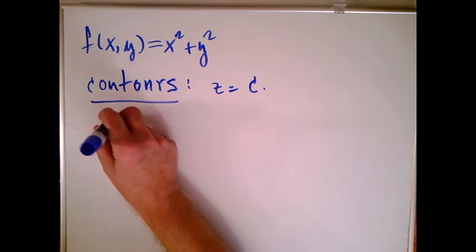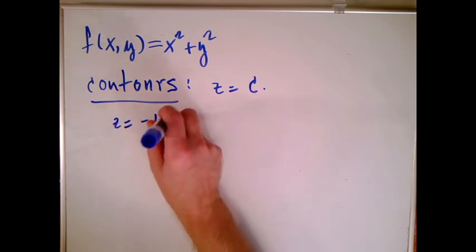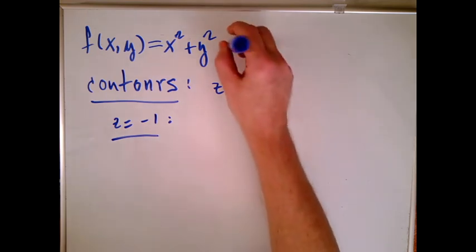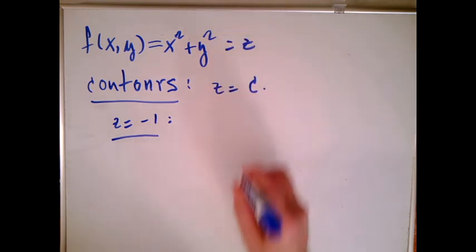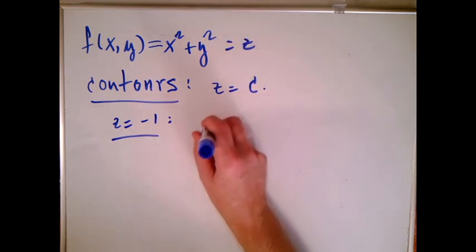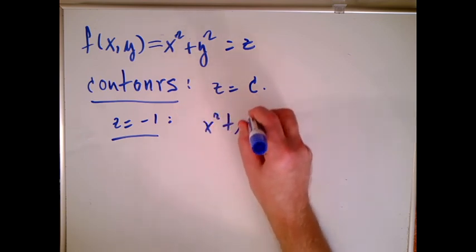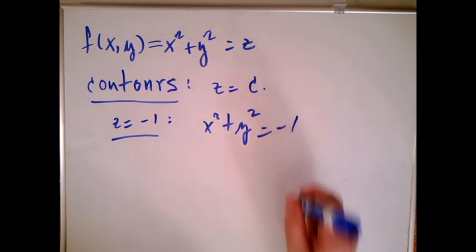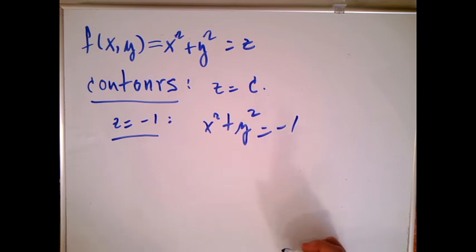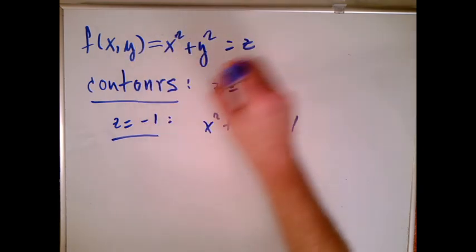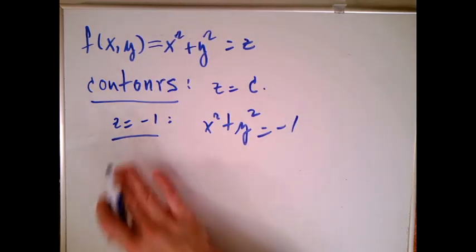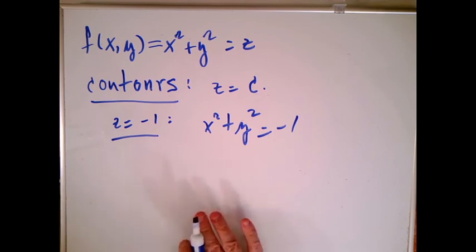If I pick something like z equals negative one, and I set that equal to z, I'm going to get x squared plus y squared equals negative one. From algebra, we know this doesn't have any solutions because the left-hand side is always positive or zero. The right-hand side is negative. So this doesn't have any solutions. What does that mean? That means whatever the graph of this is, if I chop it at height negative one, I get nothing.